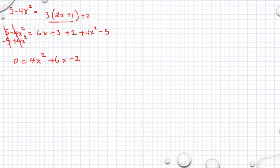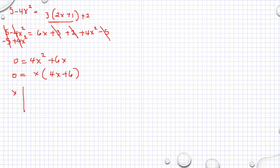After simplifying, we rearrange. The constant terms become 0. Then we can factor x outside: x times 4x plus 6 equals 0. So our first solution is x is equal to 0.